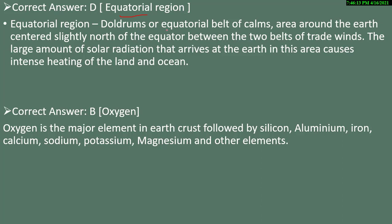Doldrums are found in your equatorial belt, which are very calm areas around the earth. They are centred slightly north of the equator, between the two belts of the trade winds. The large amount of solar radiation arriving in this area causes intense heat over land and ocean. For the second question, oxygen is the major element in the earth's crust, followed by silicon, aluminium, iron, calcium, sodium, potassium, magnesium, and other elements.